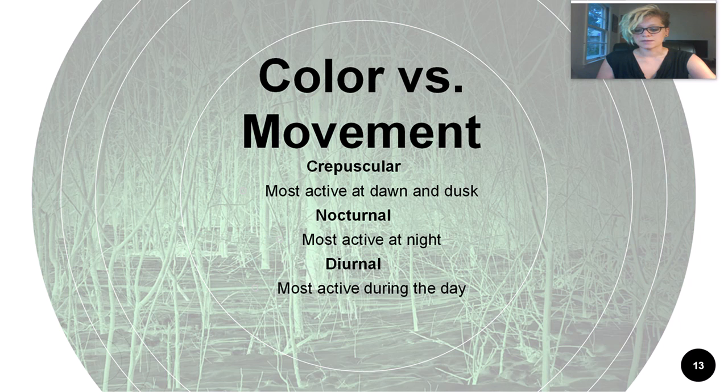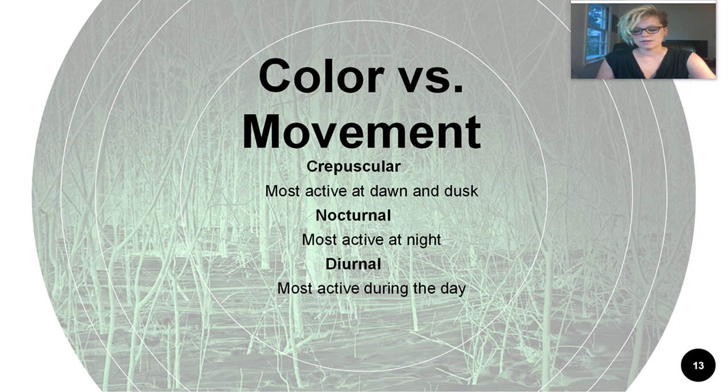Most animals are adapted to prioritize visualizing movement over visualizing color — both predator and prey need to be able to see movement. Many domesticated animals are adapted to being active at dawn and dusk; this is known as crepuscular. Crepuscular animals include cats, rabbits, rats, mice, and dogs. These animals can become more habituated to a diurnal lifestyle, but their wild cousins are crepuscular.